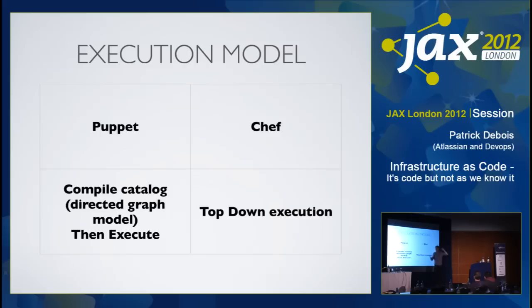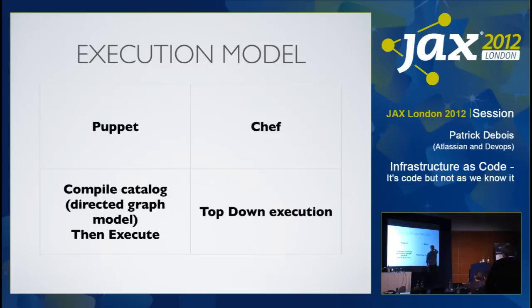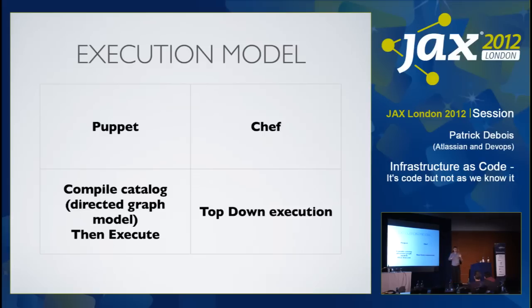Puppet lives by the model that everything should be hard-specified — if it's not specified, it's an error. That actually moved people to create Chef, saying it's too hard to reason about whether on one system it follows this order and on the next system it follows that order. In Chef, if you have a recipe that includes another recipe and so on, it will always go with execution from top to bottom.